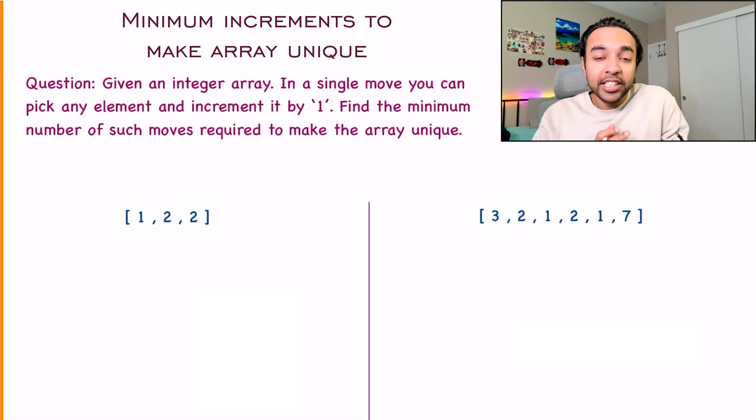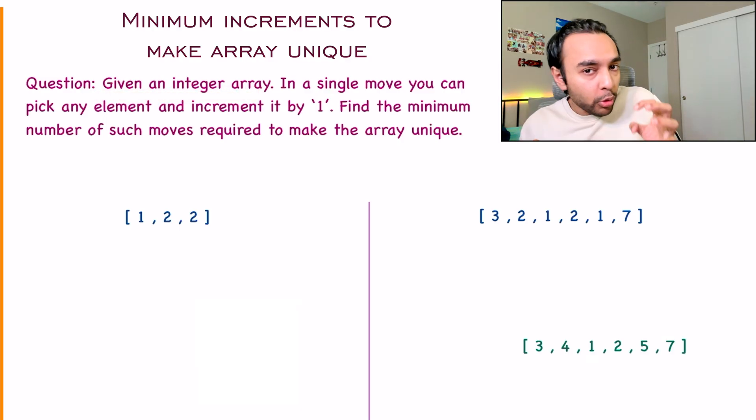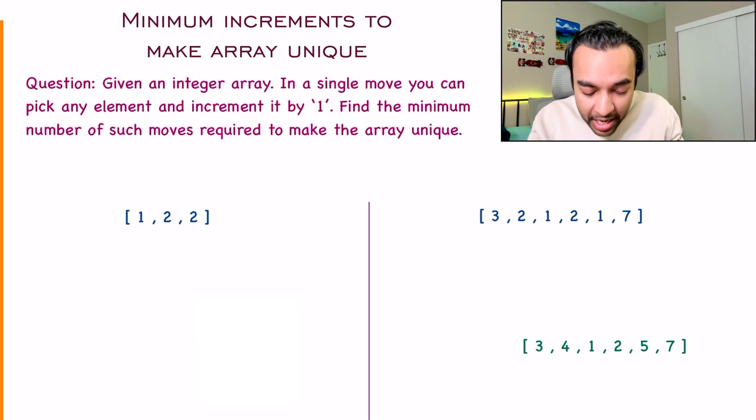Let's quickly make sure we're understanding the problem statement correctly. In this problem, you're given an integer array and you can make certain moves. In a single move, you can pick any element in the array and increment it by one. You need to find the minimum number of moves such that the array becomes unique, meaning every element should be different.